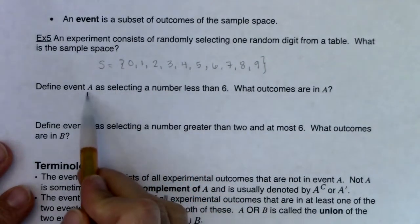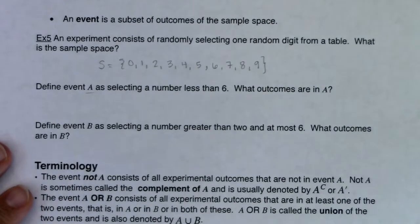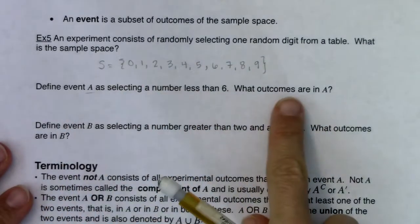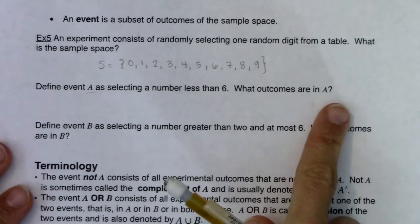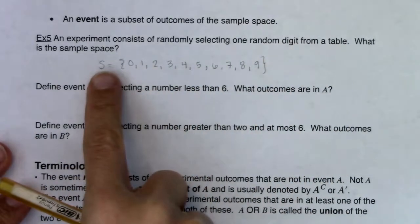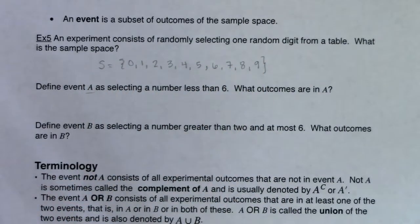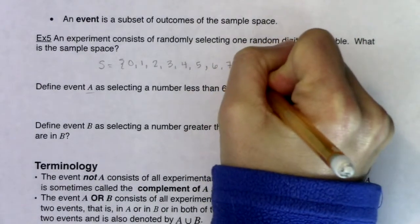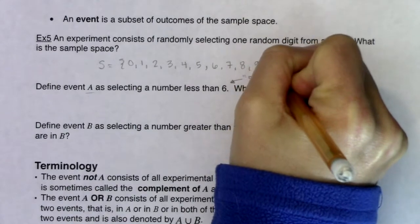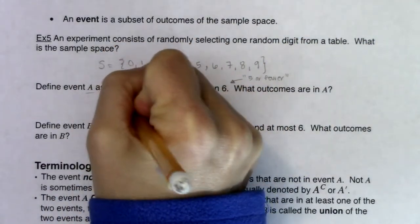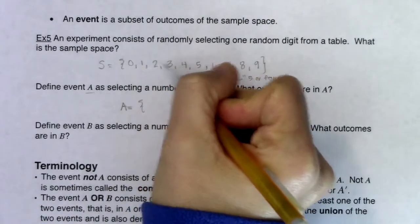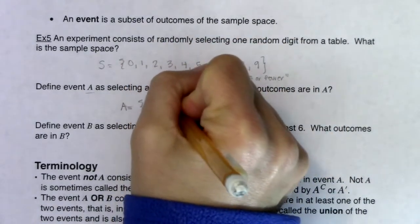Now we're going to define event A as selecting a number less than six. What are the outcomes in A? The outcomes in event A have to come from the sample space list. Less than six is the same as saying five or fewer. So the specific outcomes in event A are 0, 1, 2, 3, 4, and 5.